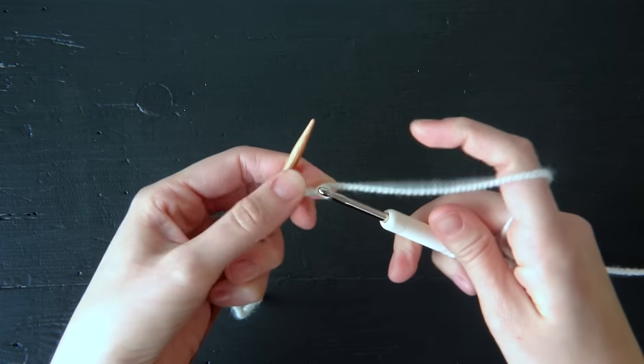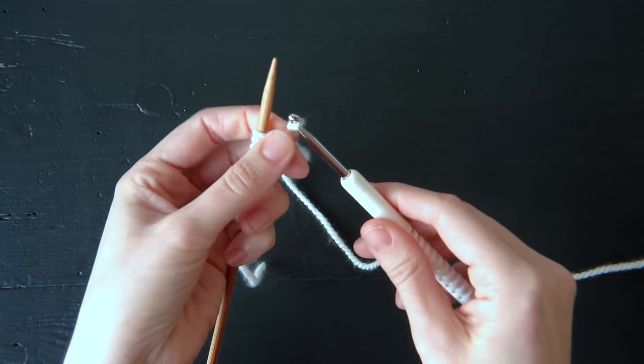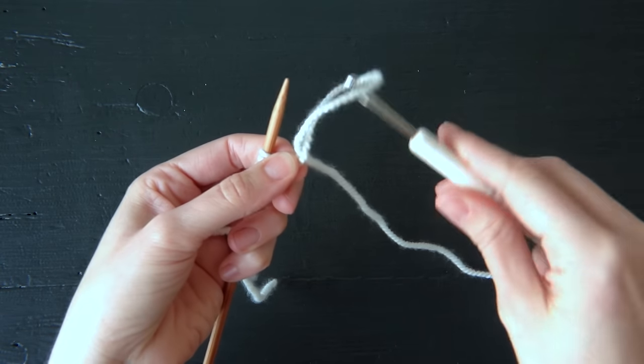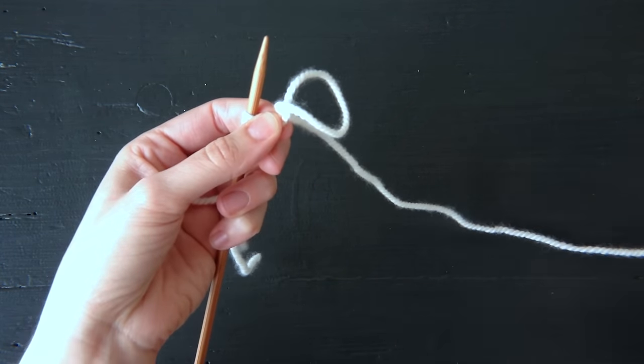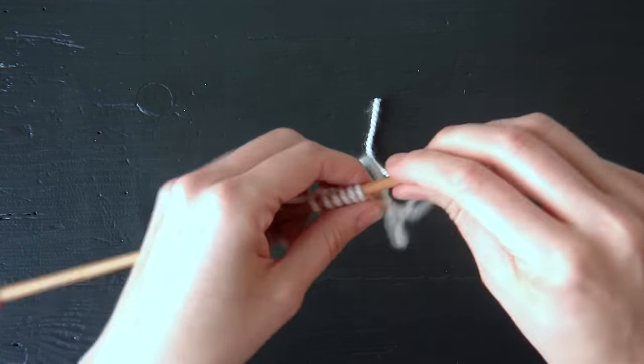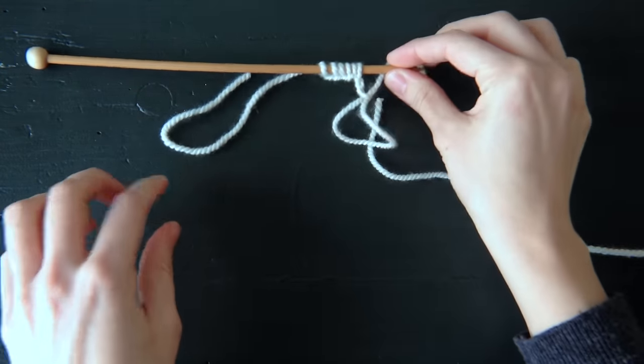Once you've chained a few stitches, just pull that last stitch so there's a loop. Use some scissors, cut your yarn and there's your provisional cast on.